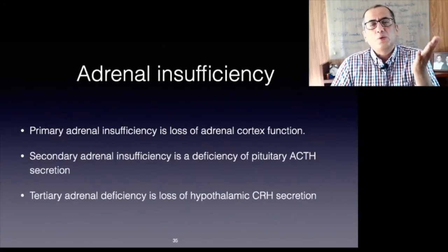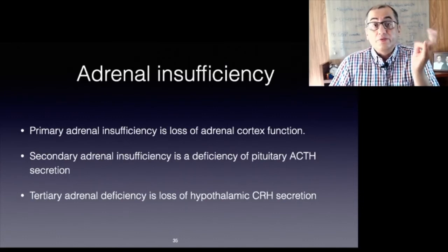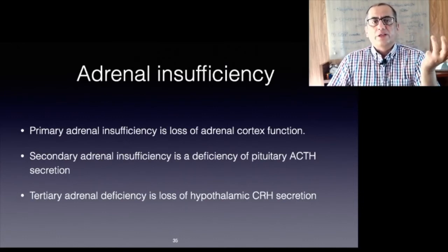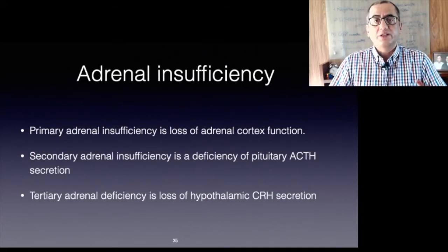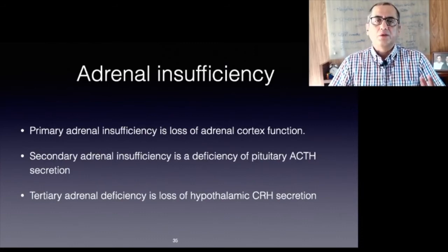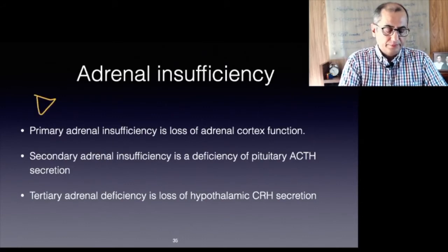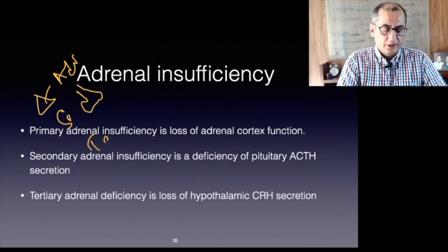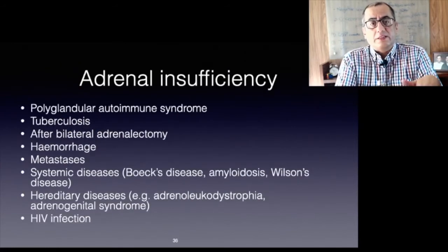Primary adrenal insufficiency is caused by loss of function of the adrenal cortex, first described by Thomas Addison in 1855. Early diagnosis remains a clinical challenge as symptoms are only evident when about 90 percent of the adrenal cortex is destroyed. Secondary adrenal insufficiency is defined as a deficiency of pituitary ACTH secretion. Tertiary adrenal insufficiency is provoked by loss of hypothalamic CRH secretion and is caused by therapeutic glucocorticoid administration, a brain tumor, or irradiation.